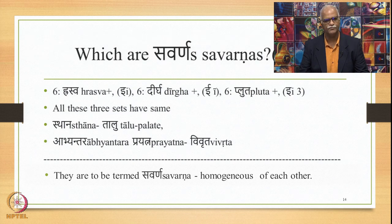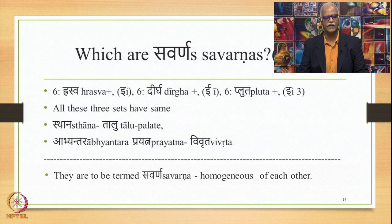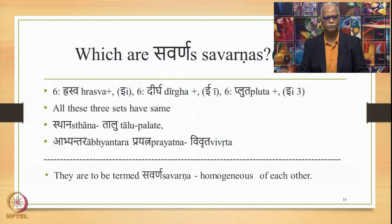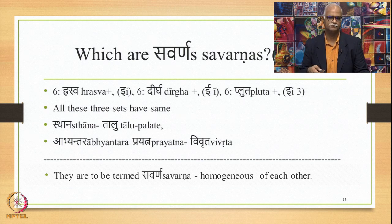Similarly, the 6 Raswa-I, 6 Deerga-I, and 6 Pluta-I varieties — all these 18 have the same Sthana, that is Talu, and same Abhyantara Prayatna, namely Vivruta. So all these 18 are to be termed Savarna of each other, homogeneous of each other.